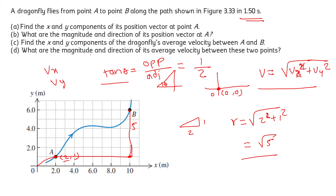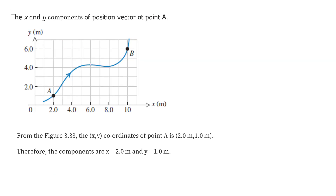First, we are going to find the x and y component of the position vector at point A. As we can see in the figure, the coordinates of point A are (2, 1), where 2 is the x coordinate and 1 is the y coordinate. So from here, we can say that the x component is equal to 2 meters, while the y component of the position vector at point A is equal to 1 meter.